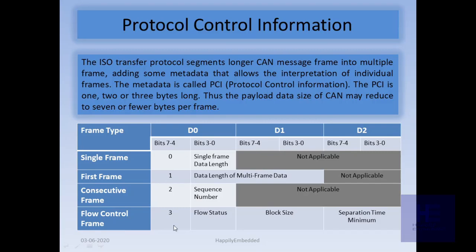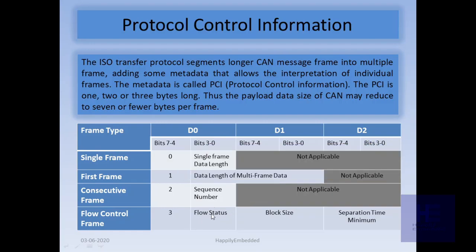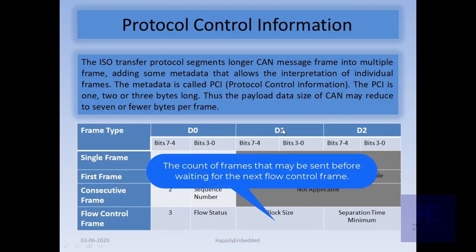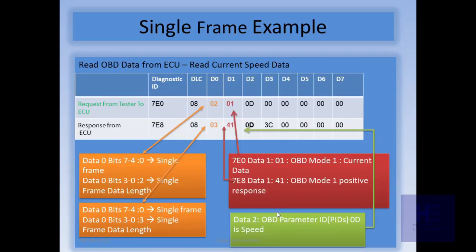For the Flow Control Frame, bits 3 to 0 represent flow status — values such as clear-to-send or overflow are sent as flow status. Data byte 1 represents block size, and data byte 2 represents the separation time minimum (STmin).